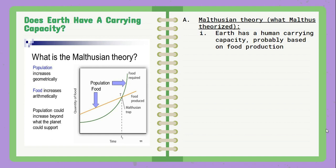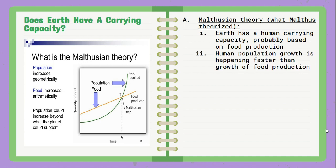He noticed that food increases arithmetically, as you can see on the line there. But human population is going to increase geometrically — exponentially. So we're going to pretty much outgrow the food that is required for us to survive. He thought human population growth was going to be growing much faster than what our food production growth might be, and that humans will eventually reach a carrying capacity limited by the food supply.